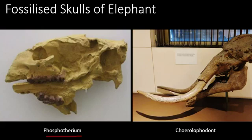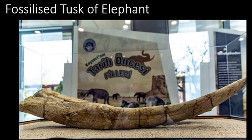Another genus of extinct elephants is called Chirulophodon. Here the incisors of the upper jaw are modified into tusks, while the lower incisors are reduced. Here is another fossilized tusk of an elephant.